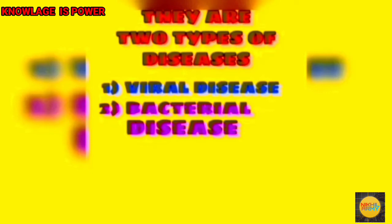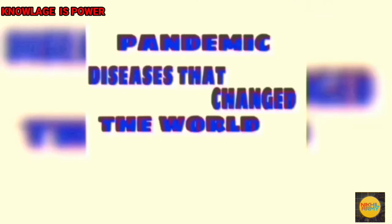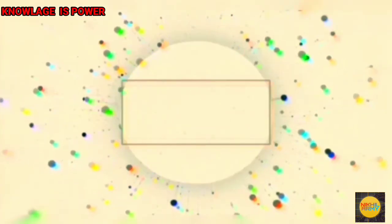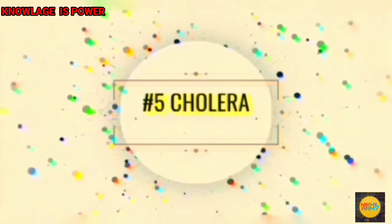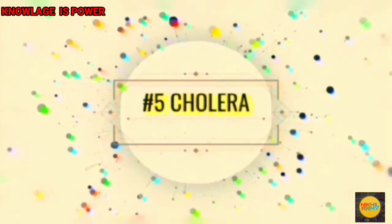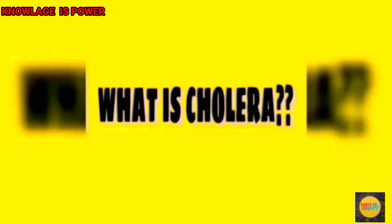Guys, now let's know how many types of diseases are there. There are two types of diseases: viral diseases and bacterial diseases. Now let's know the pandemic diseases that changed the world. Let's start with what is cholera.